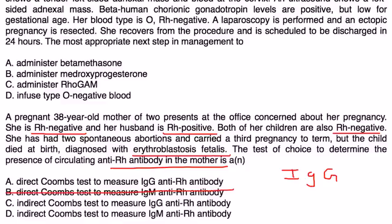That can eliminate choice B and choice D. Now we have to think about: are we doing a direct Coombs test or indirect? Remember, a direct Coombs test measures antibodies that are attached to a red blood cell, whereas an indirect Coombs test measures circulating antibodies. The direct Coombs test is done with the blood of the newborn baby.